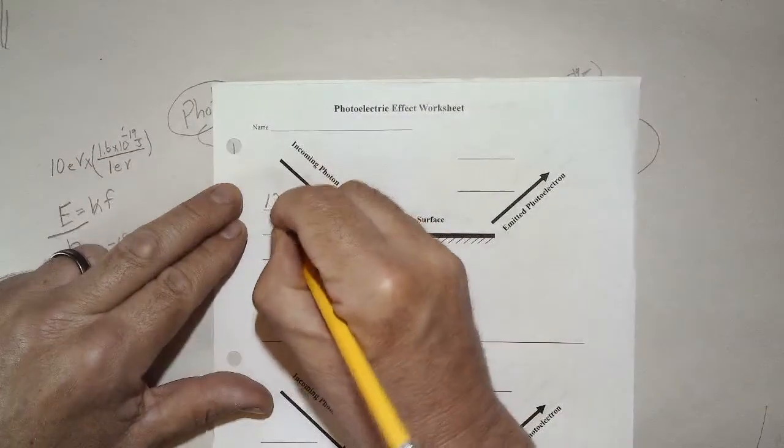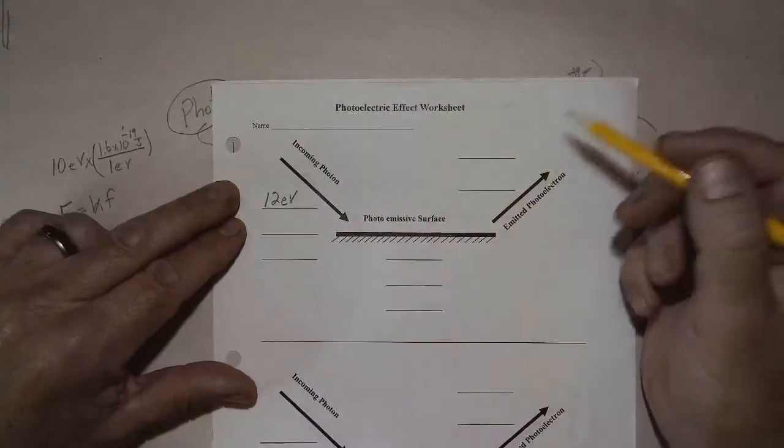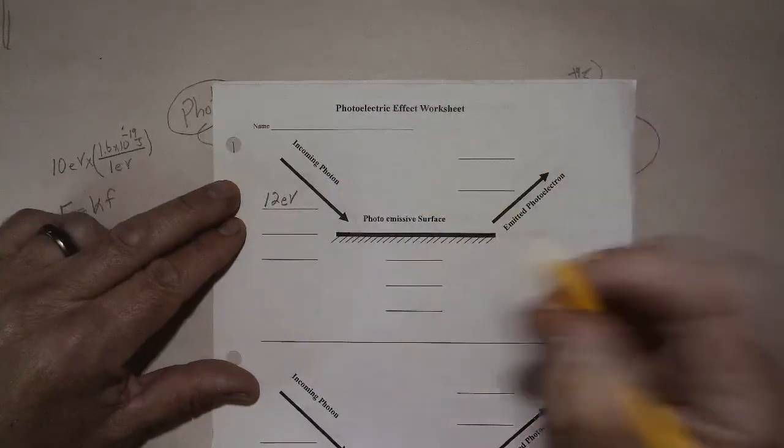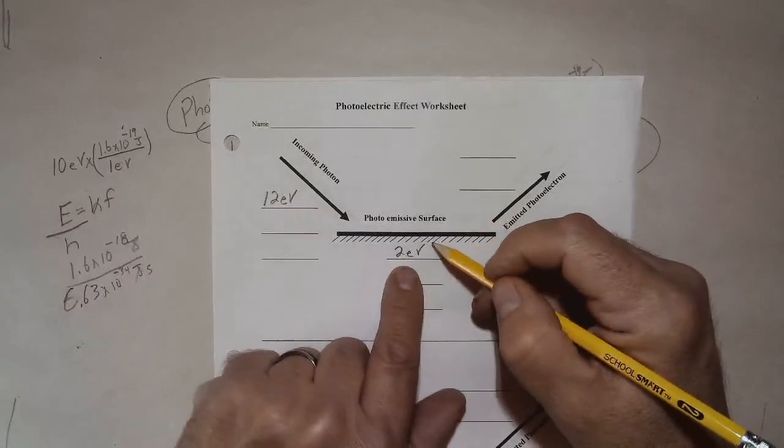Let's just come up with stuff, call it 12 electron volts coming in on the incoming photon. Photoemissive surface, what do we have here? Call that 2 electron volts worth of energy is needed to break the bonds here.